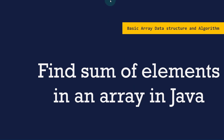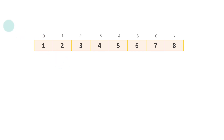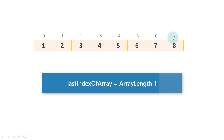We are going to create an array which will have eight elements: 1, 2, 3, 4, 5, 6, 7, 8, and we will find the sum of these elements. This array is present here and in computer science, arrays are index-based starting from 0, so the index goes from 0 up to 7, which is the length of the array minus 1.